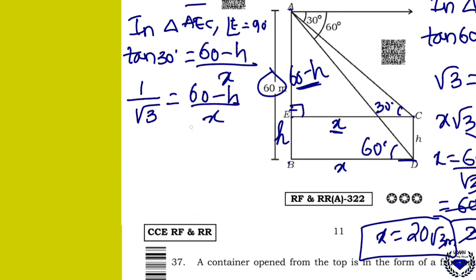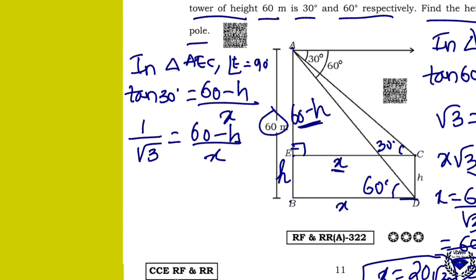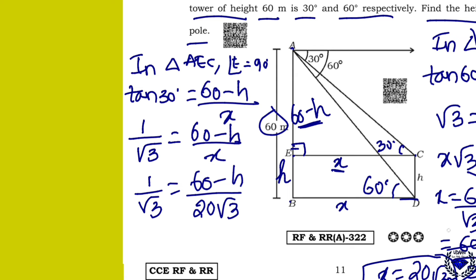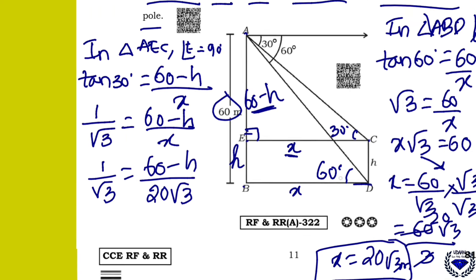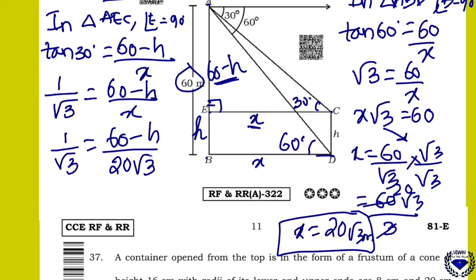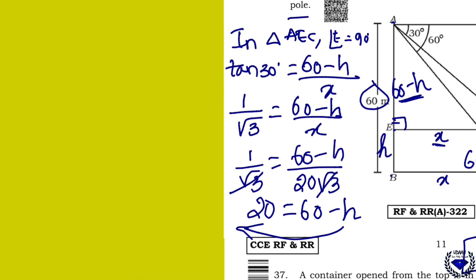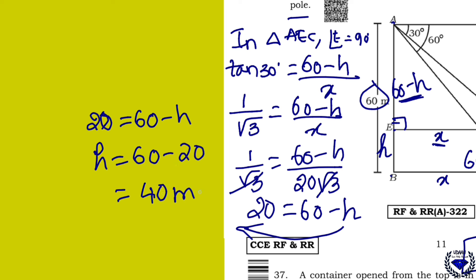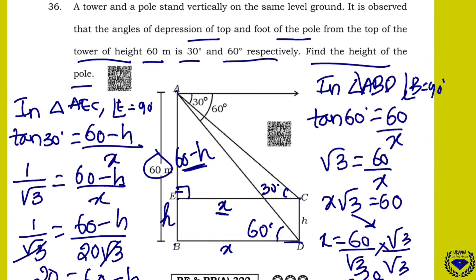Substituting X = 20 root 3 into equation 1: 1 over root 3 = (60 minus H) over 20 root 3. The root 3 terms cancel, giving 20 = 60 minus H. So H = 60 minus 20 = 40 meters. The height of the pole is 40 meters.